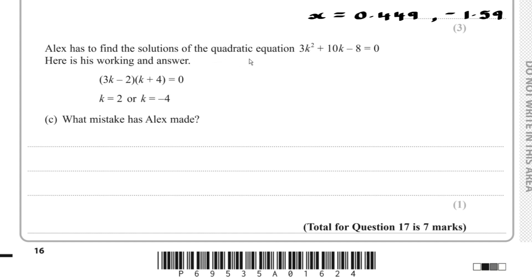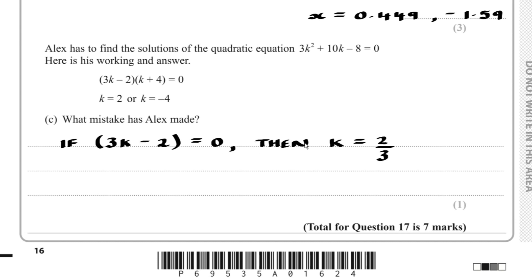Alex solves 3k² + 10k - 8 = 0 by factorising as (3k - 2)(k + 4) = 0, giving k = 2 and k = -4. The factorisation is correct: checking the expansion gives 3k² + 10k - 8. However, from 3k - 2 = 0 we get k = 2/3, not k = 2. Alex's mistake was solving the bracket 3k - 2 = 0 incorrectly.